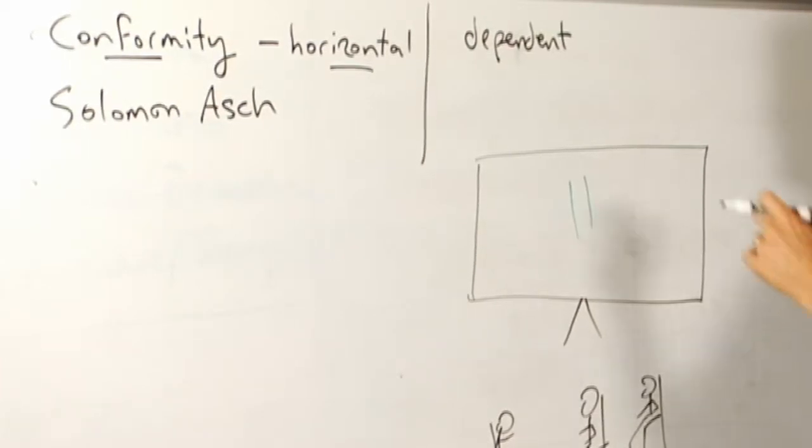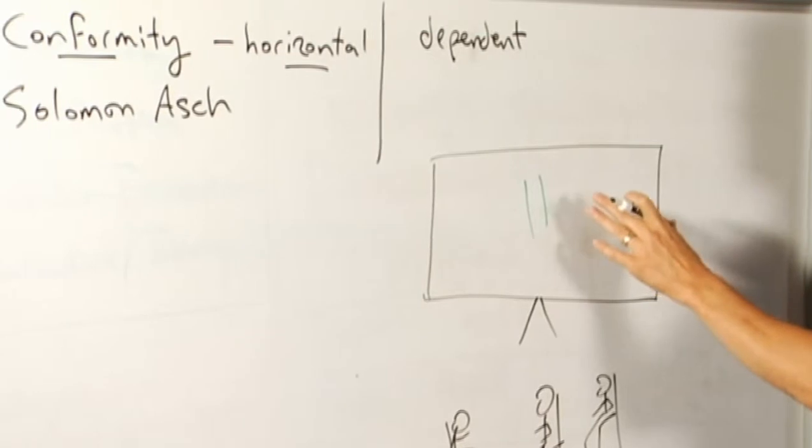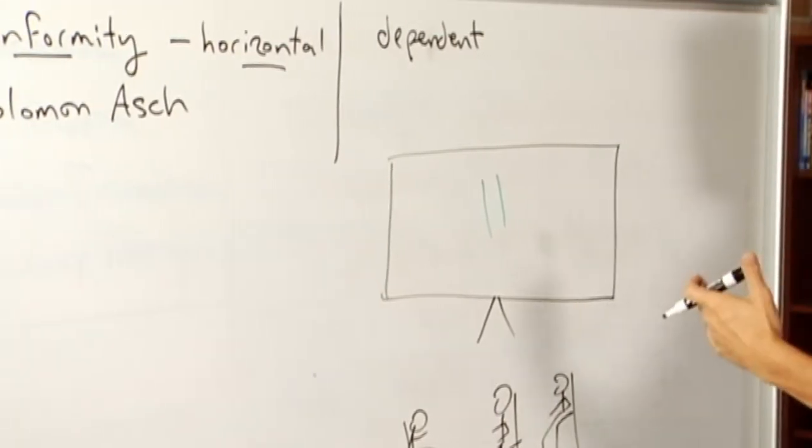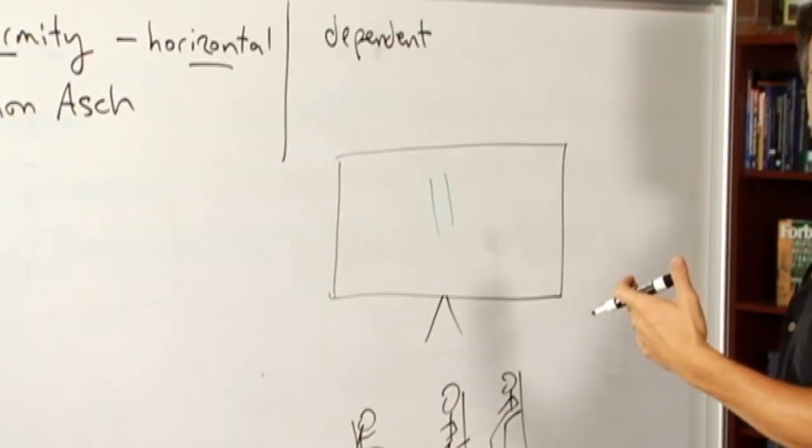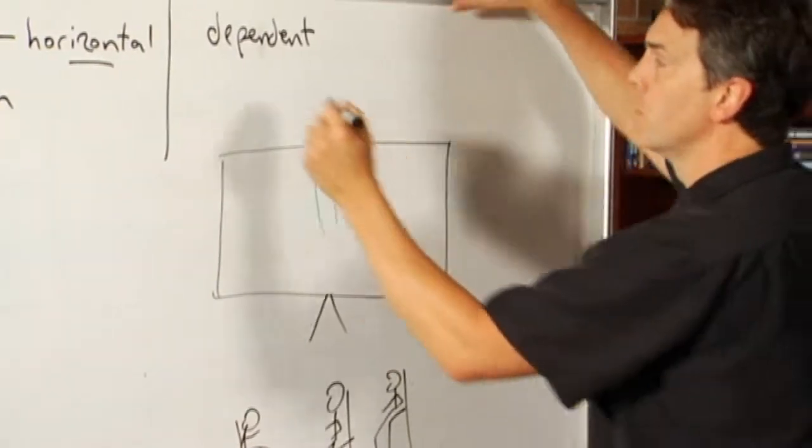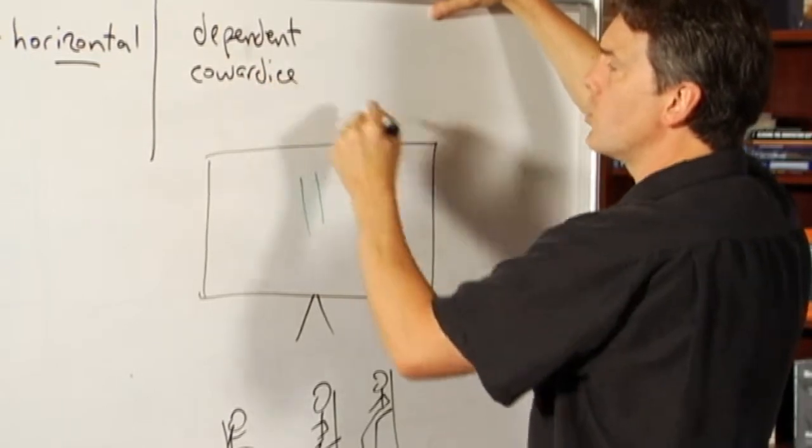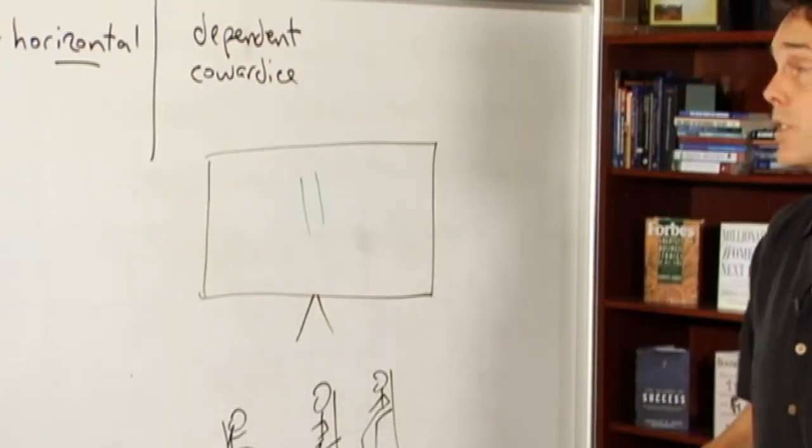Or it might be the case that our judgment independently is fine. We can see very well that the lines are different, but we don't have the courage necessary to speak our own mind because we don't want to face various kinds of disapproval. And so in a small scale, low stakes situation, we have a kind of cowardice going on.